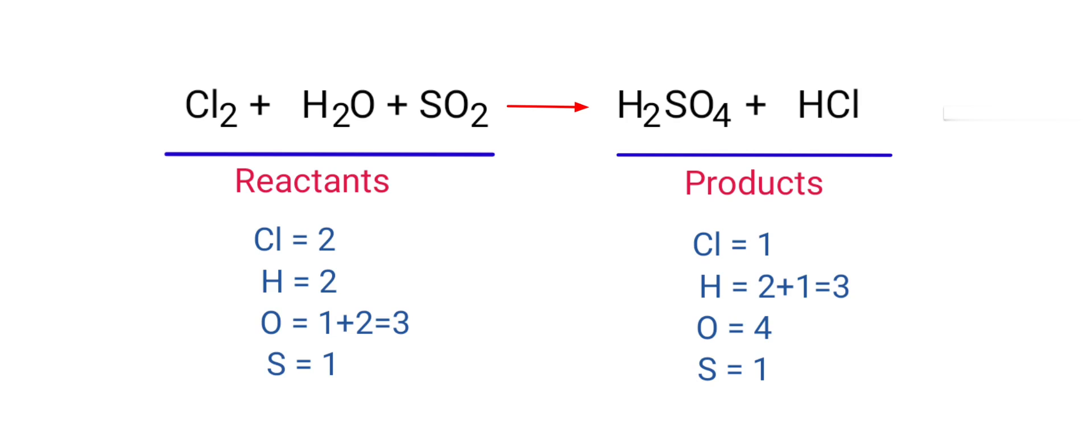The number of atoms are not balanced on both sides. To balance the chemical equation, we need to make use of coefficients. A coefficient is a number that we place in front of a chemical formula.